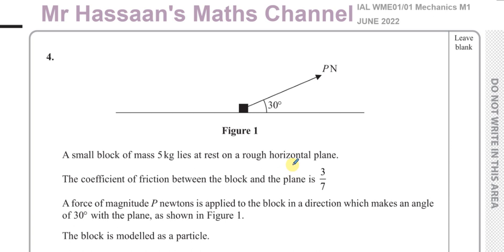This question is about statics. It says: a small block of mass 5 kilograms lies at rest on a rough horizontal plane. The coefficient of friction between the block and the plane is 3 over 7. A force of magnitude P newtons is applied to the block in a direction which makes an angle of 30 degrees with the plane as shown in figure 1.